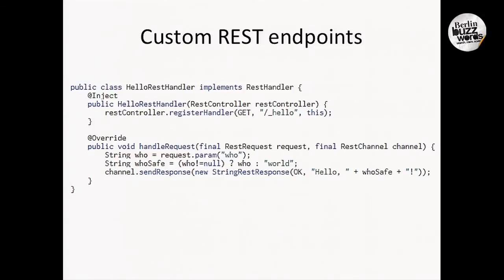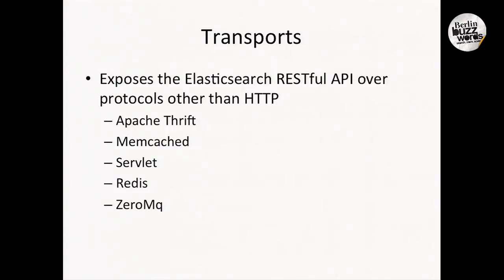Speaking about the REST capabilities of Elasticsearch, we can have multiple transports supporting that. By default, Elasticsearch uses HTTP for transport. You can use Apache Thrift. There are multiple other transports - Elasticsearch already has some as plugins you can install, including 0MQ, though I'm not quite sure of the use cases for that. You can even write your own transport. All of the Elasticsearch REST API can basically be exposed via different protocols. The Thrift protocol is one often used to speed up over the default HTTP protocol.